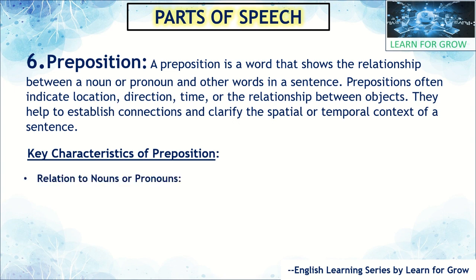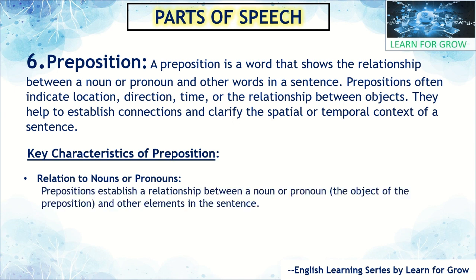The first key characteristic is relation to noun or pronoun. Prepositions establish a relation between a noun or pronoun — meaning the noun or pronoun acts as the object of the preposition. Just as we see objects with nouns and pronouns generally, here also the preposition establishes the relation, giving the noun around the position of object and other elements in the sentence.